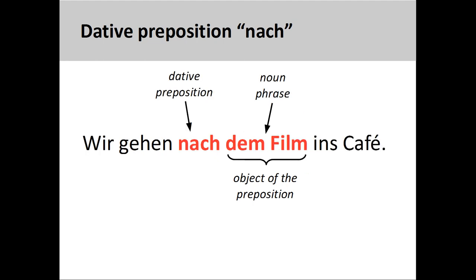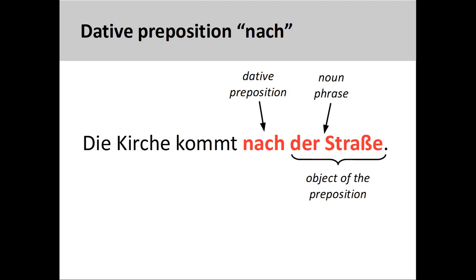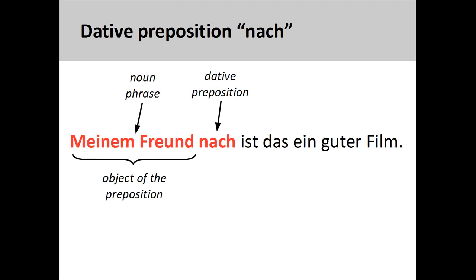Nach can also be used to describe activity that comes after a specific point in time, such as wir gehen nach dem Film ins Café — we are going to the café after the film. The preposition can also describe how something comes after something else in a physical sense: die Kirche kommt nach der Straße — the church comes after the street. Nach also means according to, as in meinem Freund nach ist das ein guter Film — that's a good film, according to my friend. Note that when used in this manner, the preposition is placed after the object.